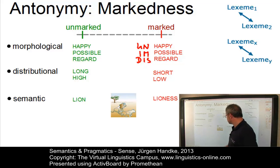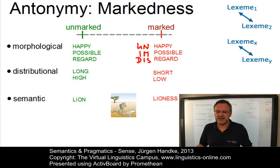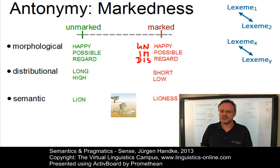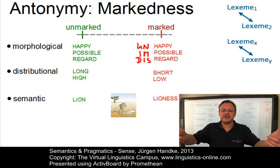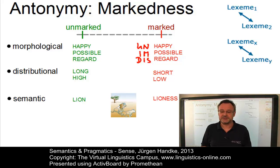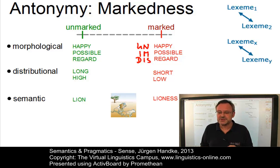A famous example of semantic markedness is the distinction between lion and lioness. In sentences such as the lion and the lioness were hunting together, there is a gender contrast between the two terms — but this is neutralized in sentences such as we saw a group of lions in the grass, since the group may well contain both males and females. So the unmarked term lion refers to what is common to lion and lioness.